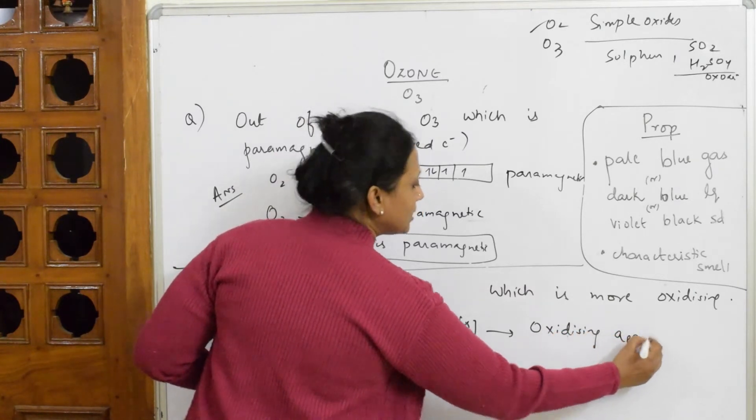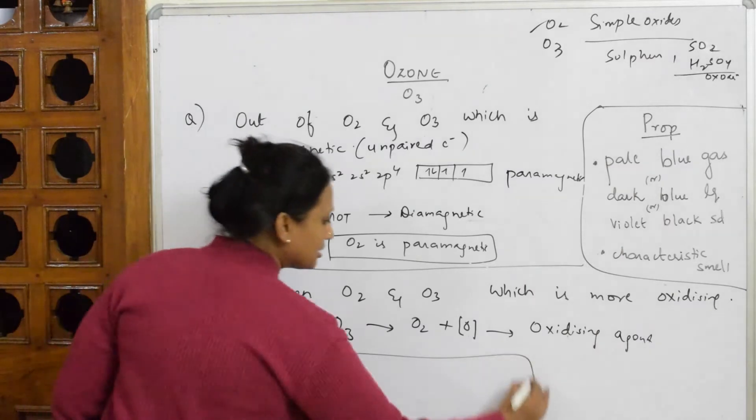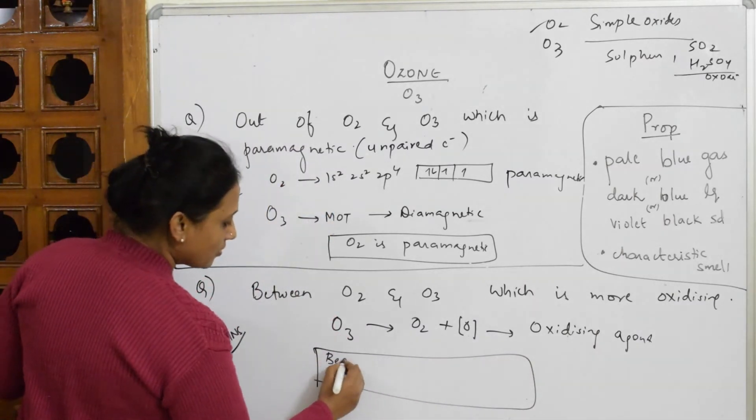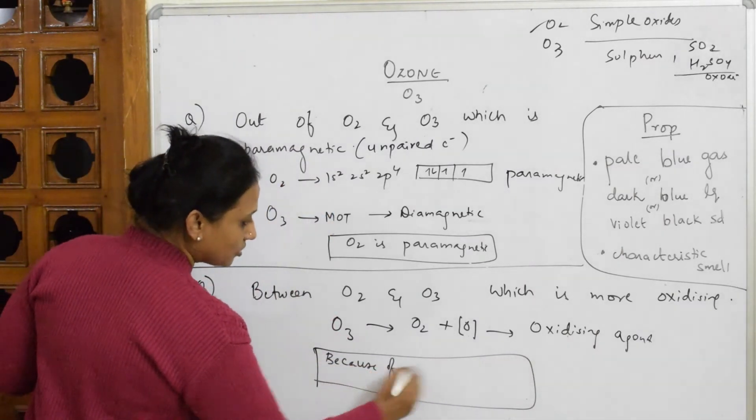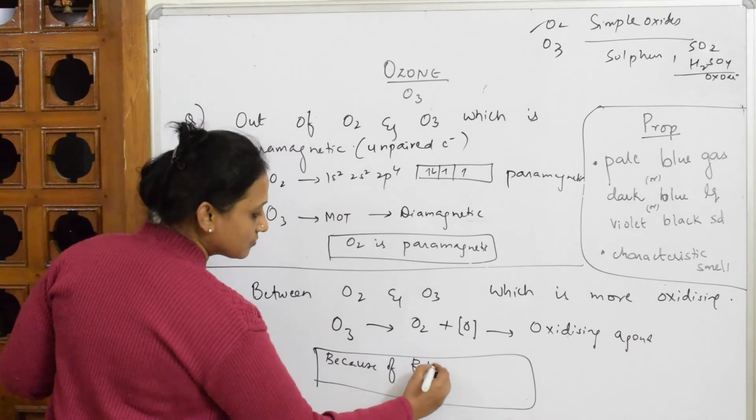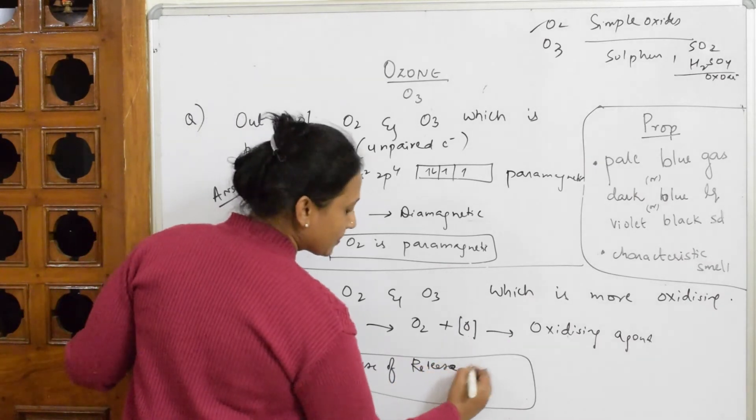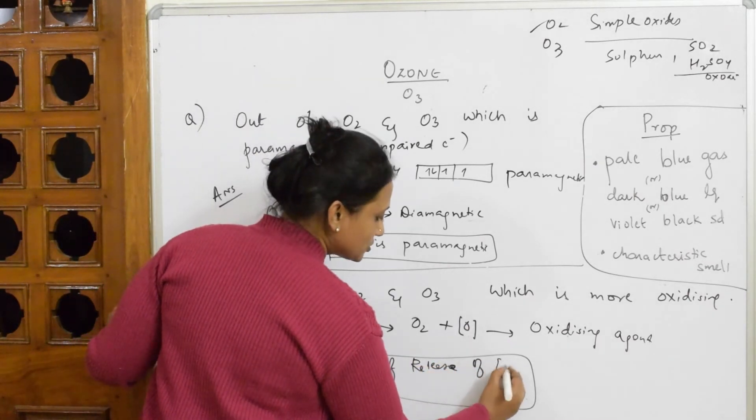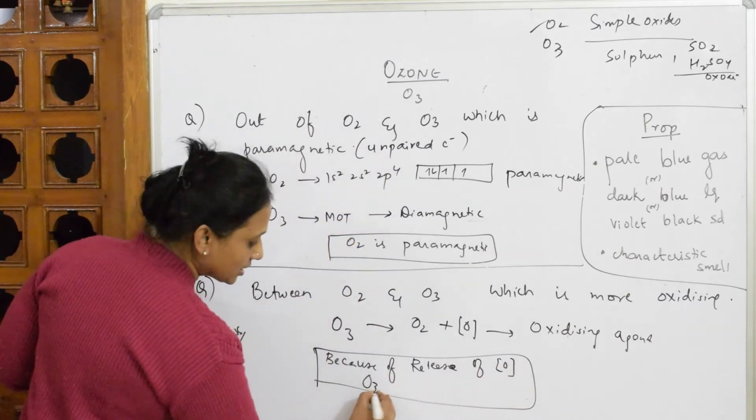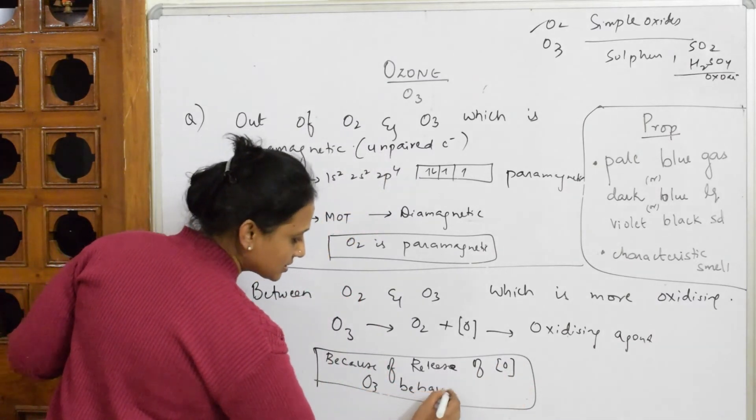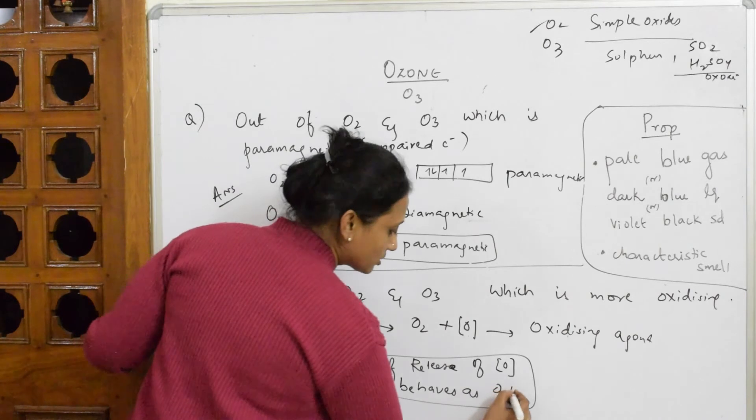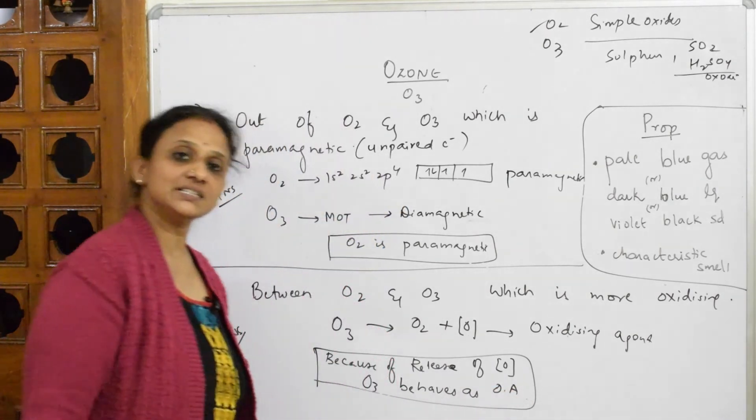So you're going to write the reason like this in a box: because of release of oxygen or nascent oxygen, O3 behaves as oxidizing agent. Please don't write shortcuts in the board exam. Oxidizing agent.